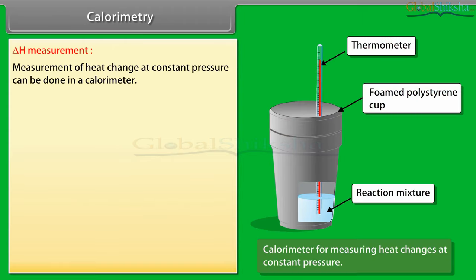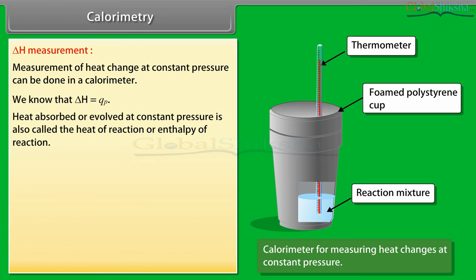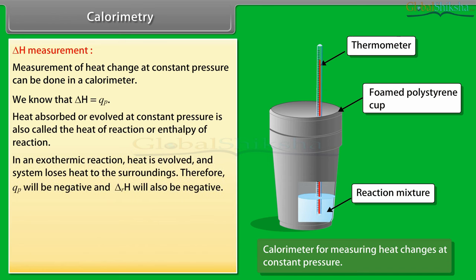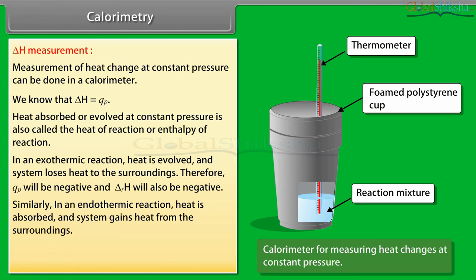ΔH measurement: measurement of heat change at constant pressure can be done in a calorimeter. We know that ΔH = Q_P. Heat absorbed or evolved at constant pressure is also called the heat of reaction or enthalpy of reaction. In an exothermic reaction, heat is evolved and the system loses heat to the surroundings; therefore Q_P will be negative and ΔRH will also be negative. In an endothermic reaction, heat is absorbed and the system gains heat from the surroundings; therefore Q_P will be positive and ΔRH will also be positive.